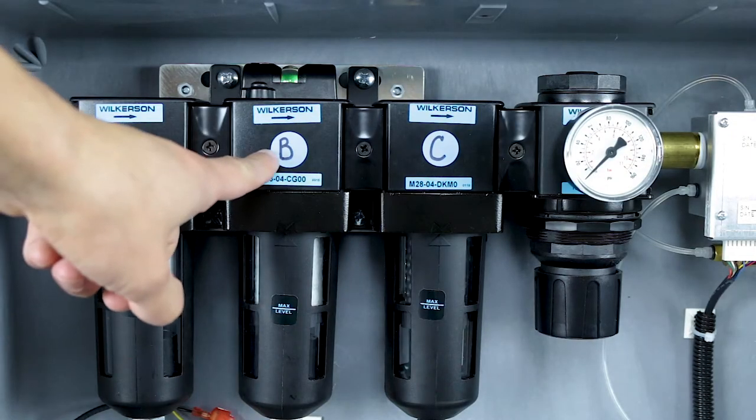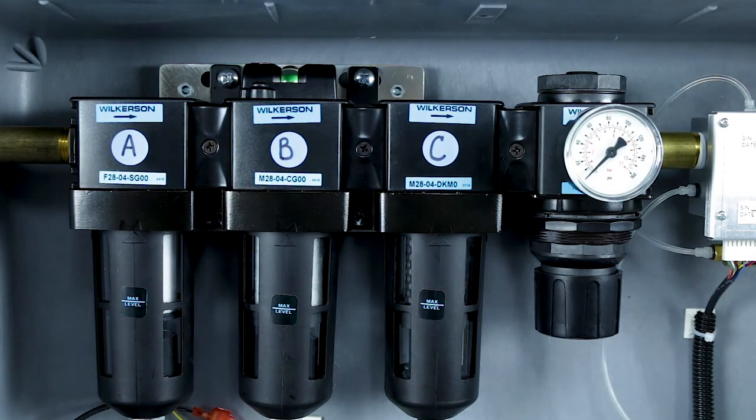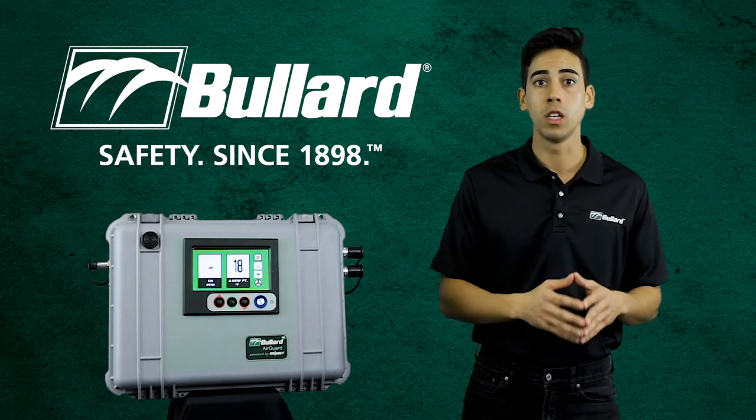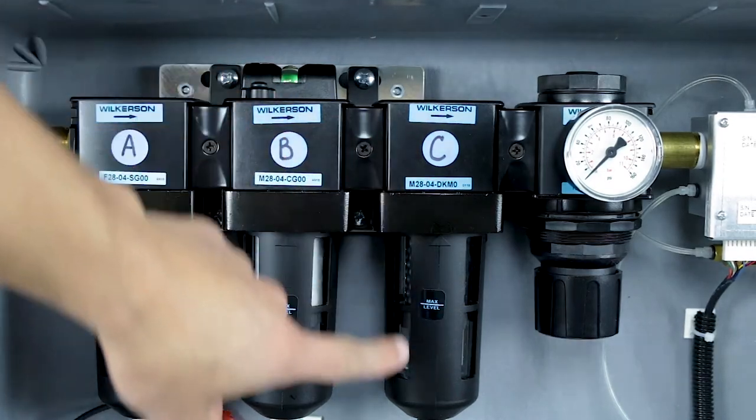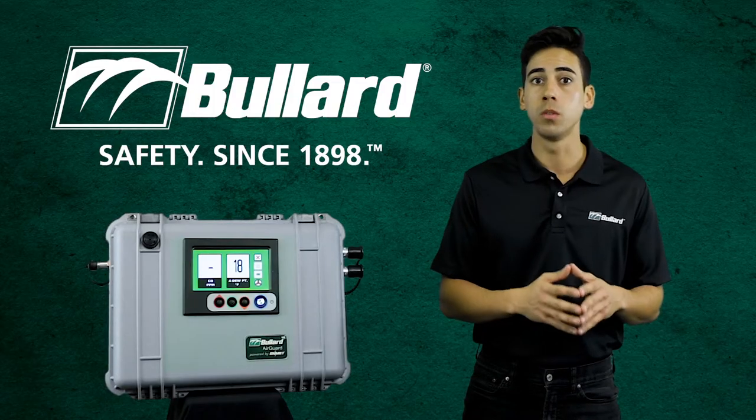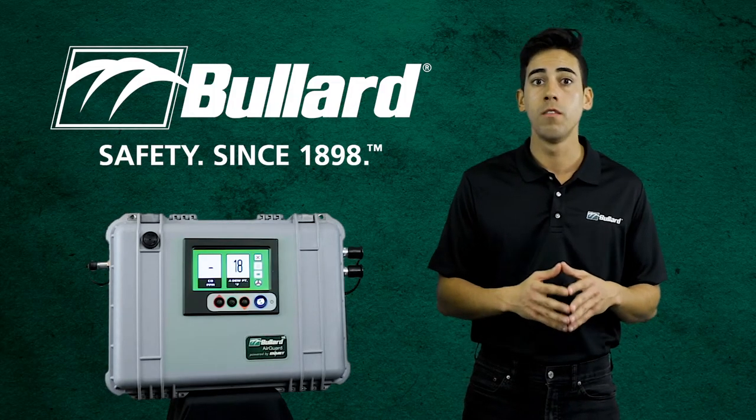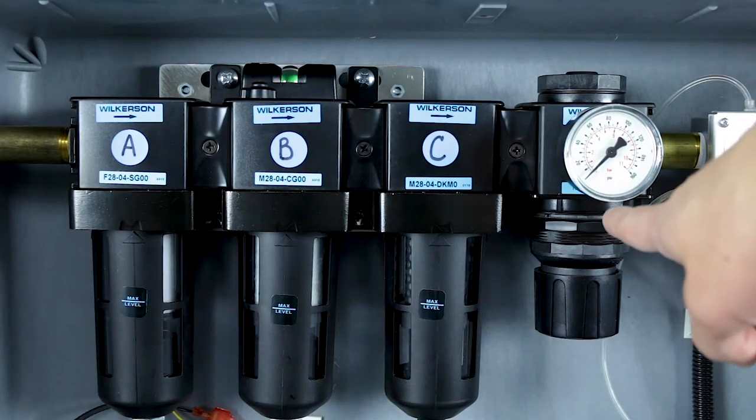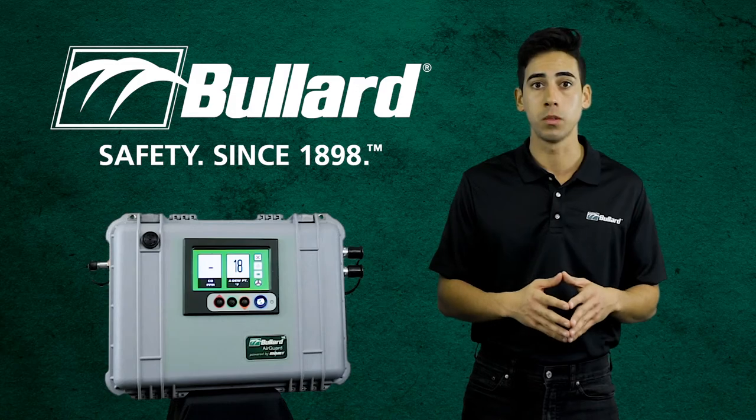Position B is a 0.1 micron coalescing filter, which is the secondary high efficiency particulate filter. Position C holds the charcoal absorption filter, which absorbs odors. Finally, we have the adjustable pressure regulator, which controls the CFM output to the respirators.